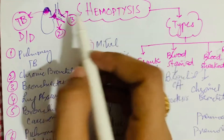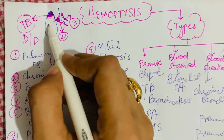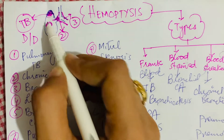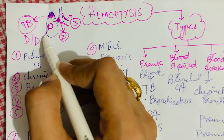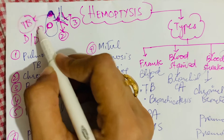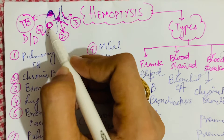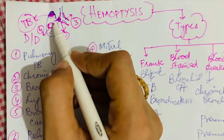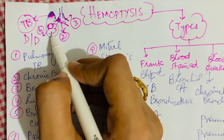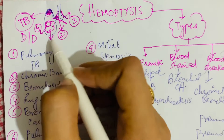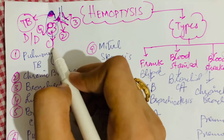Other causes of hemoptysis from lung disease include lung abscess and lung carcinoma.